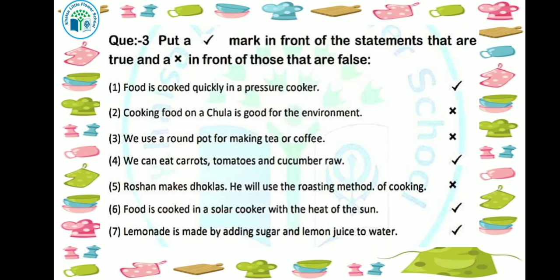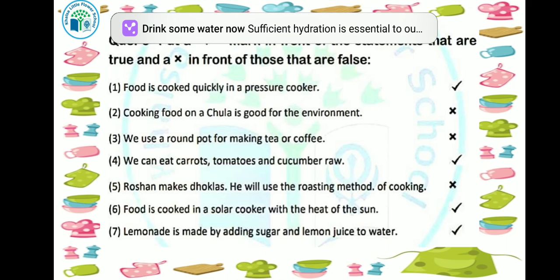Next: lemonade is made by adding sugar and lemon juice to water. To make lemonade, we add sugar to water, mix it, and then add a little lemon juice — and our lemonade is ready. So this sentence is true.